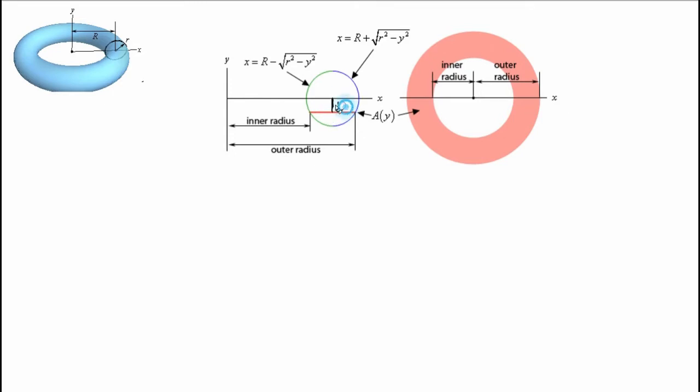And so we need to put this cross sectional area in terms of y. So given a value of y, what is the cross sectional area? To find this, we know this cross sectional area is the area of this large circle subtracted from the area of the small circle. So it's going to be pi outer radius squared minus pi inner radius squared. Now the question is, what are these outer and inner radiuses in terms of y?